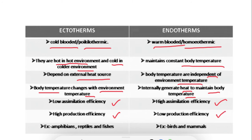You may be wondering about what assimilation efficiency and production efficiency are. I do have a video on ecological efficiency — I will keep that link in the description box below. Examples of ectothermic animals are amphibians, reptiles, and fishes, whereas birds and mammals are warm-blooded animals.